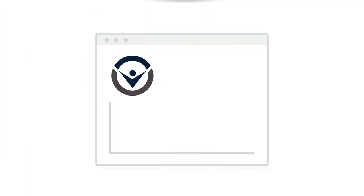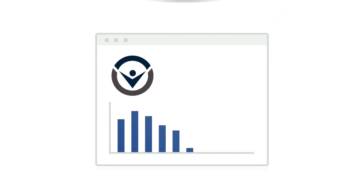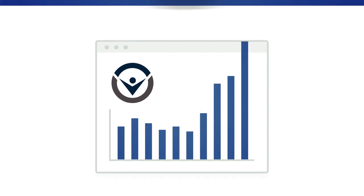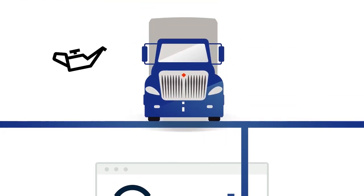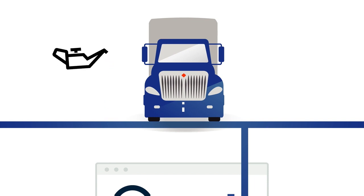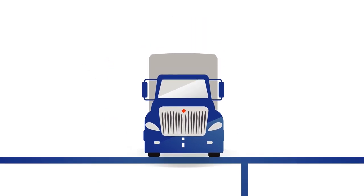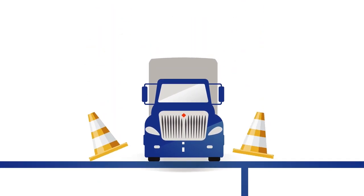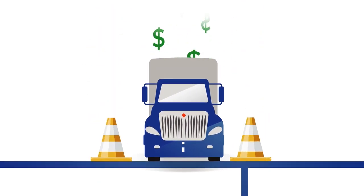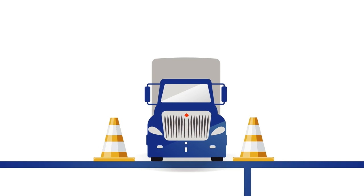On-Command Connection delivers value to a customer's bottom line that is easy to see. By identifying problems early, customers can address minor maintenance issues before they become bigger, more expensive ones.